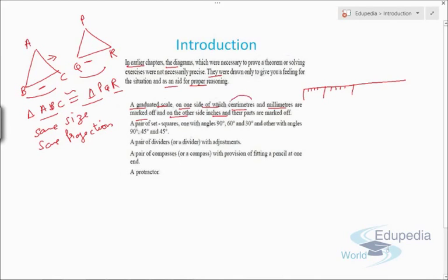Generally we use centimeters and millimeters. A pair of set squares. We have a set square in geometry box. Any geometry box you can buy from the local market or any stationary shop you have nearby.